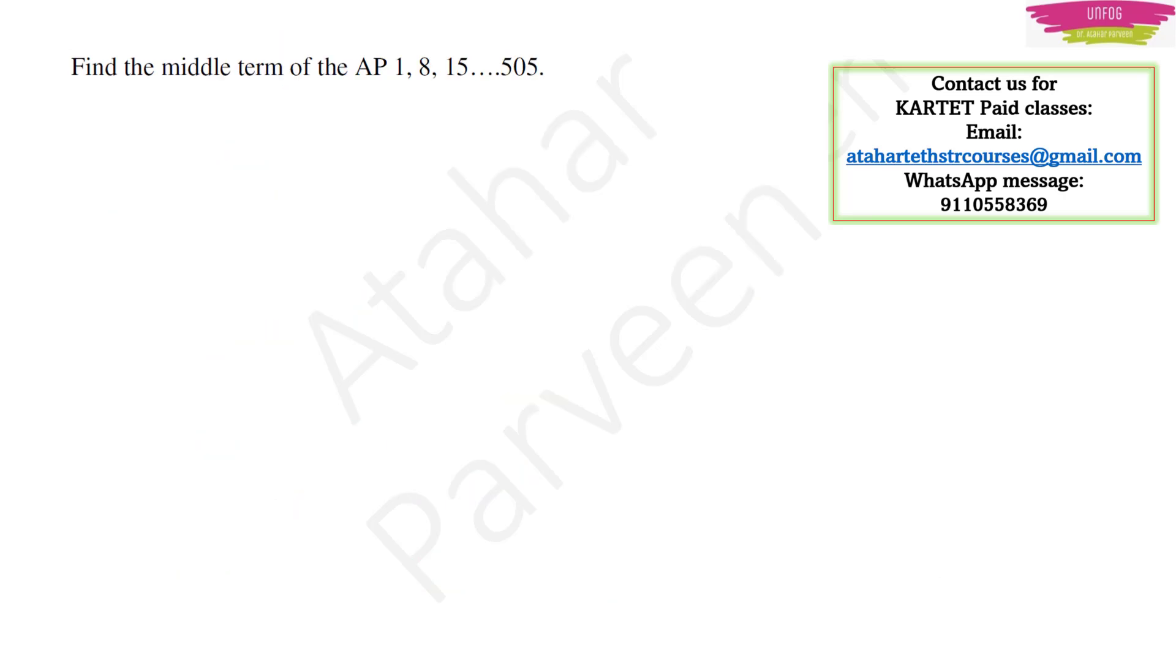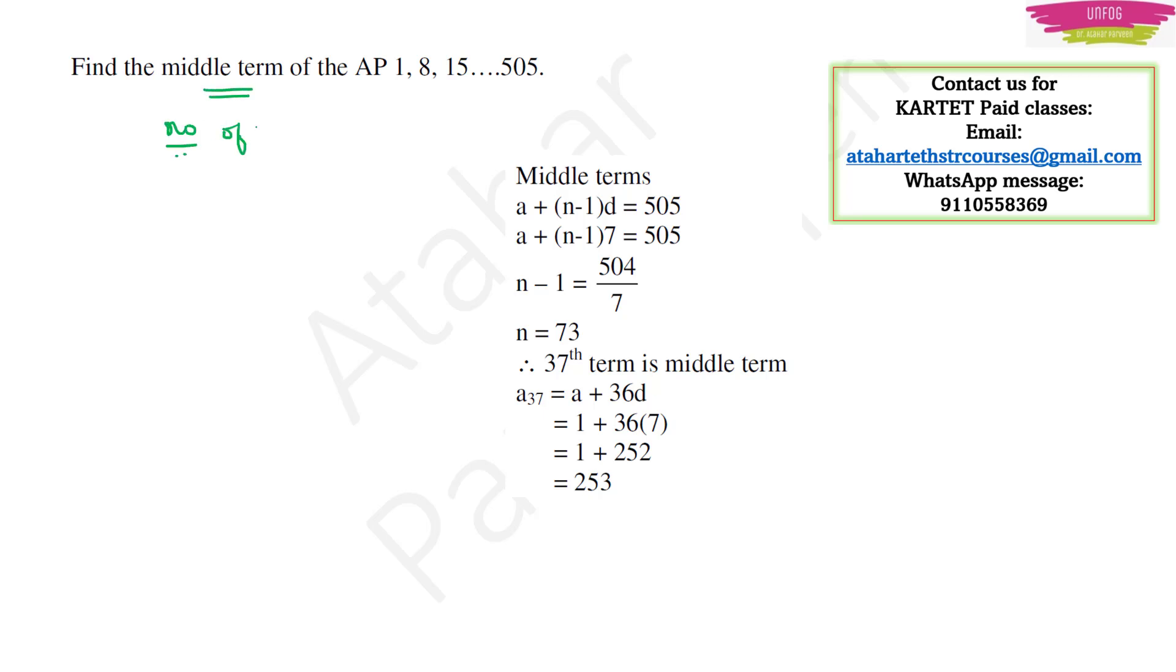Another most expected question, find the middle term of the AP 1 comma 8 comma 15 comma till 505. Here the question is we need to find the middle term. But in order to find the middle term, I should know the number of terms, then only I can find the middle term. So number of terms if I know, then only I can find the middle term. So my aim is first to find n.